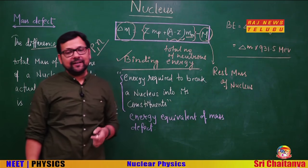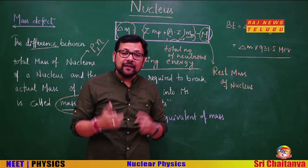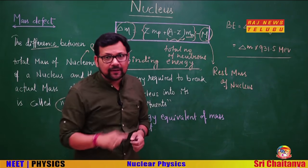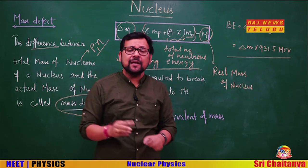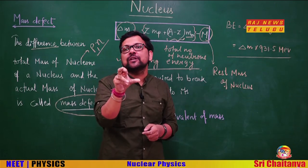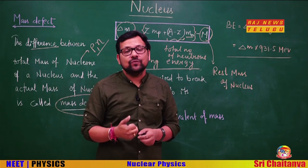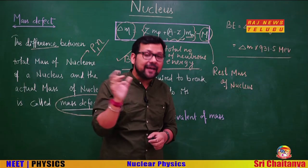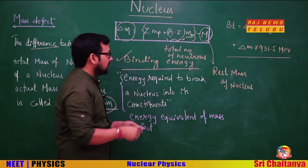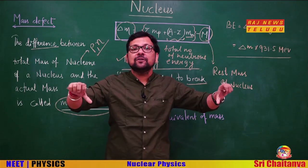To define binding energy: it is not that we directly observe the lost energy, but logically we can supply energy to the nucleus to make it unstable. The amount of energy at which the nucleus becomes unstable is the energy that was initially lost when forming the nucleus. So binding energy is the energy required to break a nucleus — the energy supplied to make the nucleus unstable.